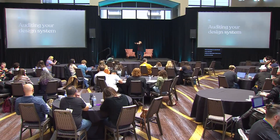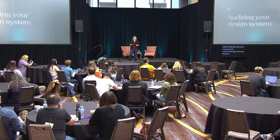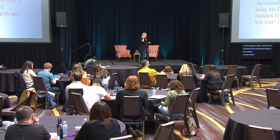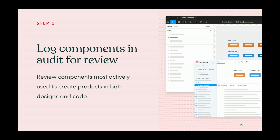When we audit our system, we can find issues and then make fixes that branch out across products — it's super powerful. Accessibility audits have been around for a while, but applying them in design systems is a relatively new thing. Essentially, an accessibility audit reviews our designs and our code so we can find issues and fix them.